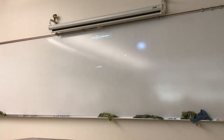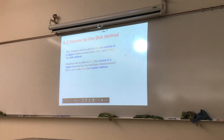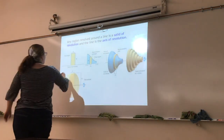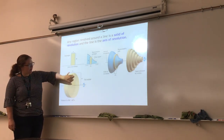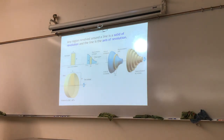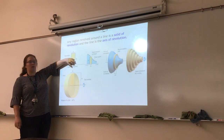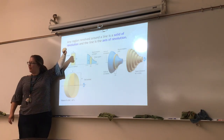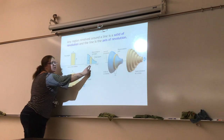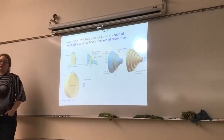We're doing volume by the disc method. We are going to be rotating around the axis. Anytime you revolve a region around a line, it's called a solid of revolution — a solid shape created by revolving something around the axis. We represent it with a rectangle. The height of the rectangle we usually use capital R for radius. The function for the height of the rectangle is your radius, and your dx — your change in x — is your width.